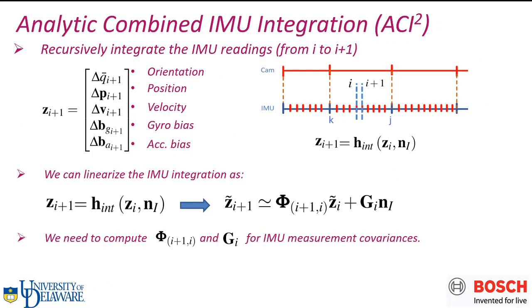To explain our integrator, we take one time step from I to I plus 1 between K and G, for example. We want to compute the integrator state ZI plus 1, including rotation, position, velocity, gyro bias, and acceleration bias. We abstract this integration as a hint. In order to capture the covariance of the measurements, we also need to do the linearization and propagate the covariance of the noise. Hence, the full integration should include the integrated measurements ZI plus 1, also the linearization and the noise Jacobian GI.